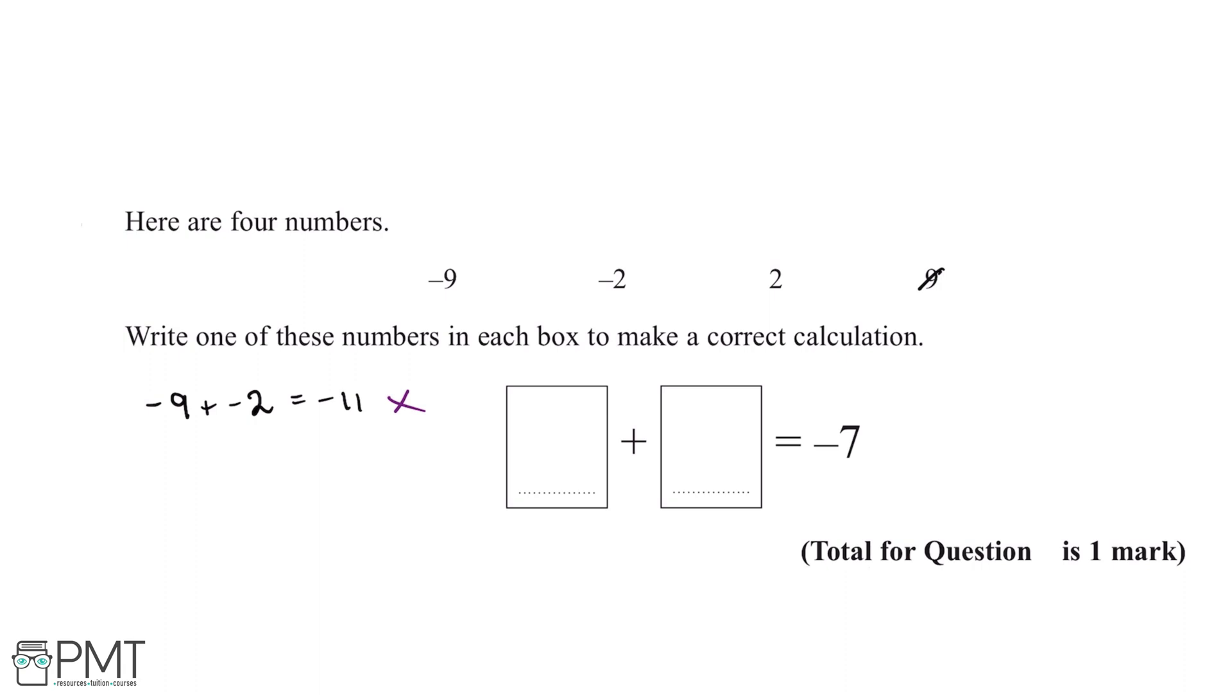We'll next try minus two add two, which gives us zero. This is also not minus seven, so we can cross this combination out.